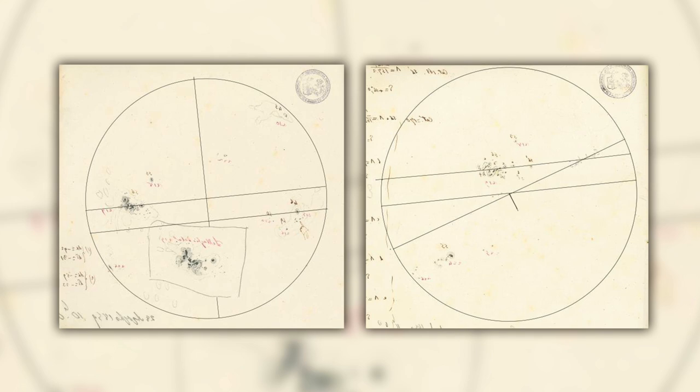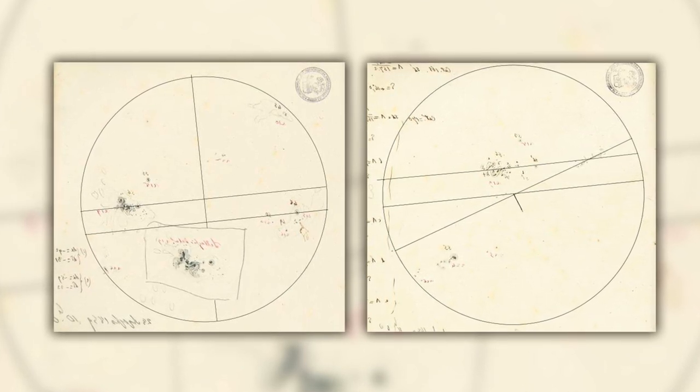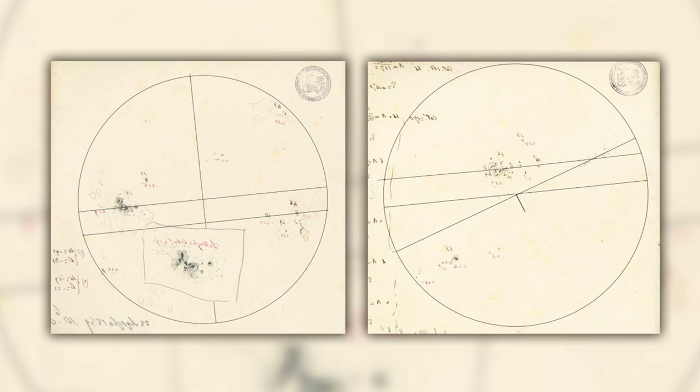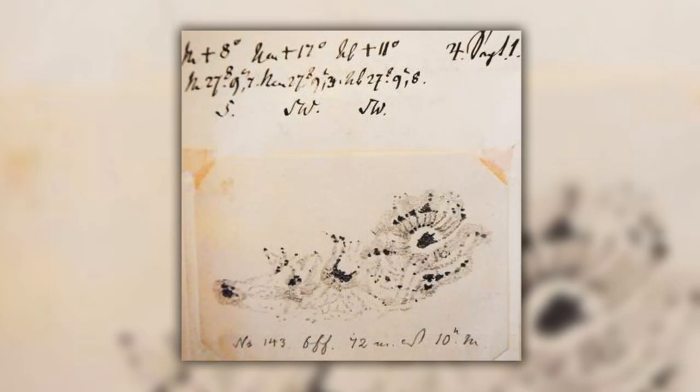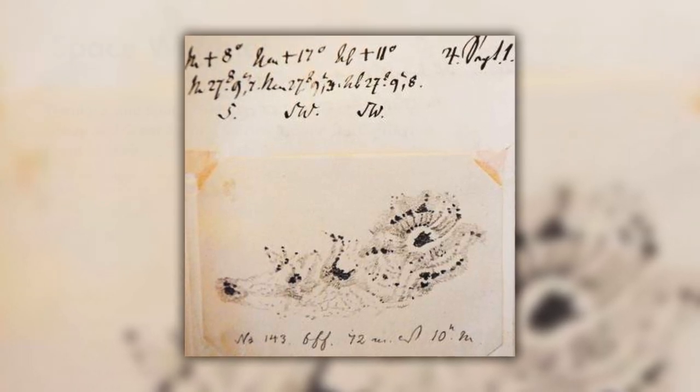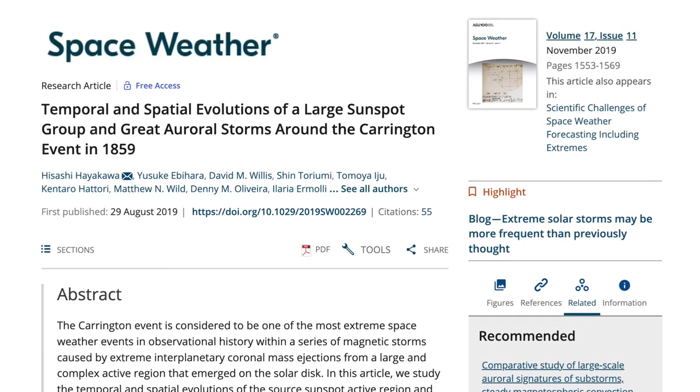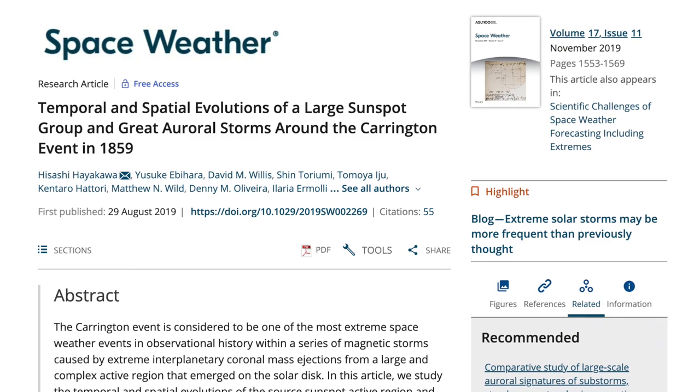A number of astronomers saw Carrington sunspot including Father Angelo Secchi in Italy and Heinrich Schwab in Germany, and the solar flare was also witnessed by amateur astronomer Richard Hodgson. Historic observations are shown in this fantastic 2019 paper, and I've linked it below in the description.